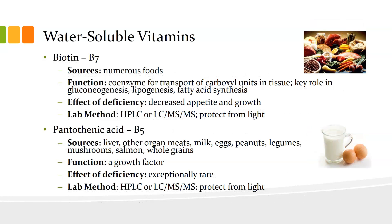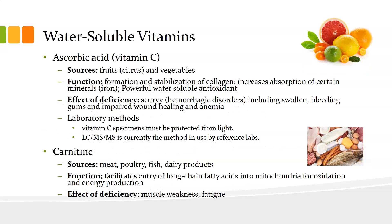Biotin is B7, found in numerous foods. It is a coenzyme for the transport of carboxyl units in tissue and has key roles in gluconeogenesis, lipogenesis, and fatty acid synthesis. Deficiency leads to decreased appetite and growth. Lab methods are HPLC and LC-MS/MS, protect from light. Pantothenic acid is B5, found in a wide variety of foods including liver, organ meats, milk, eggs, peanuts, legumes, mushrooms, salmon, and whole grains. It is a growth factor; deficiencies are exceptionally rare because it is found in so many foods.